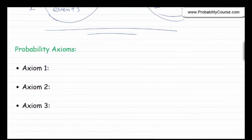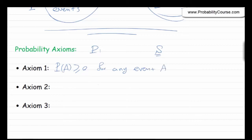Now we want to talk about probability axioms — some fundamental axioms that every probability measure must satisfy. There are three of them. We have a sample space, and on that sample space we define a probability measure that must satisfy these three axioms. First, the probability of any event must be non-negative. Second, the probability of the entire sample space must equal 1, which is reasonable because the outcome is always in the sample space, so the sample space always occurs.